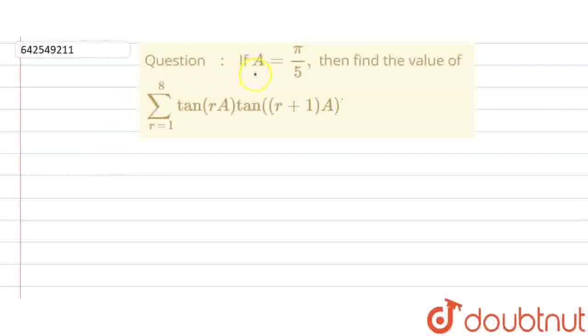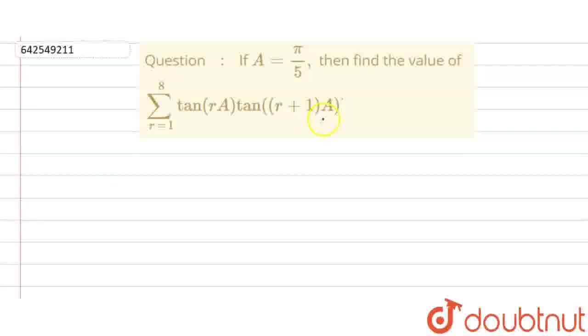The question says: if a is equal to π by 5, then find the value of summation r equals 1 to 8 of tan(ra) · tan((r+1)a).